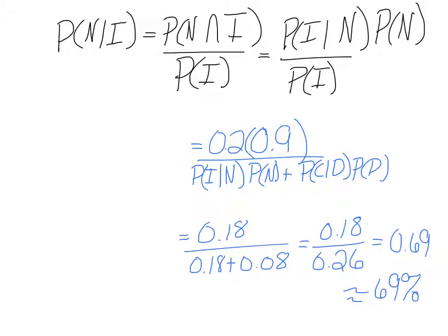We have this all set up here. On top we have 0.2 for the probability that you are incorrect and we have 0.9 given that they are naturally blonde, because 90% of them are naturally blonde.